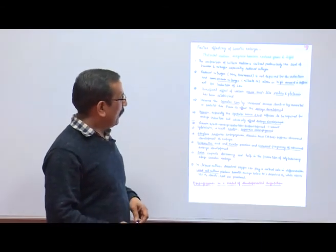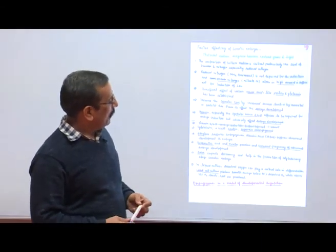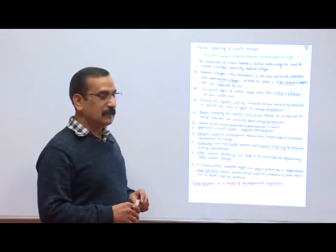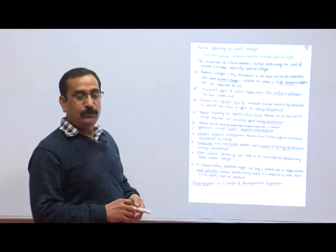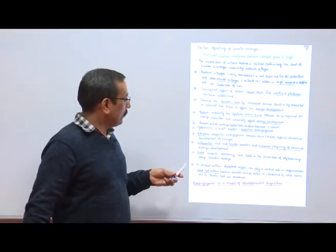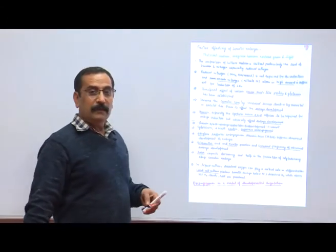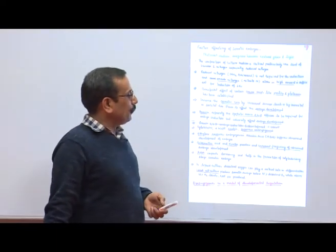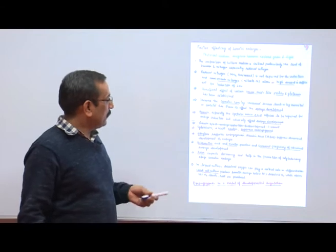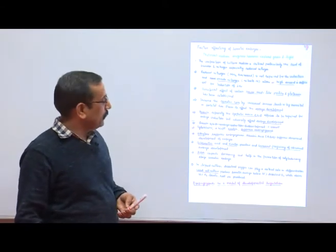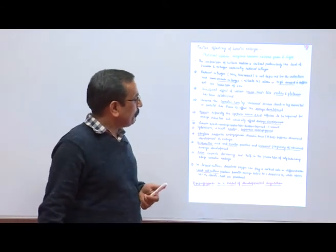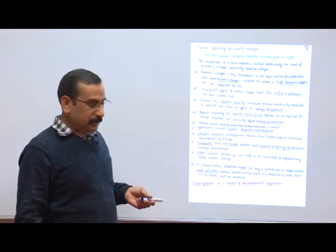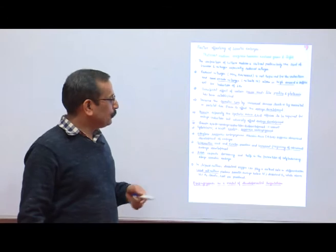Abscisic acid imparts dormancy and helps in the formation of cotyledon stage somatic embryo. If we use liquid media, dissolved oxygen plays a critical role in differentiation. Carrot cultures produce somatic embryogenesis at 15% dissolved oxygen, while above 16% oxygen level, roots are produced.